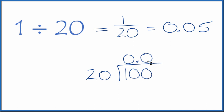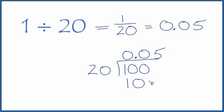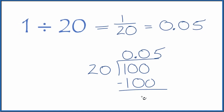Now I know that 5 times 20 is 100. I subtract, I get 0. So 1 divided by 20, that's the decimal 0.05. That's what we found before.